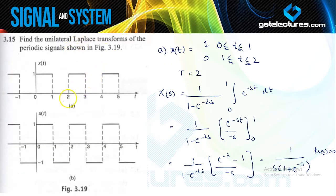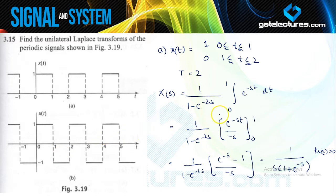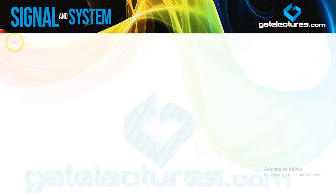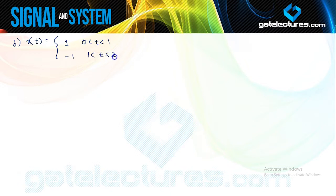Now we look at the second part of the same question. From the second part also you can see that this is a periodic function which repeats after an interval of 2 seconds. So we can express x(t) as having value 1 for the time interval 0 to 1, value minus 1 for time intervals 1 to 2, and the time period is also 2.